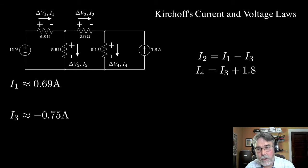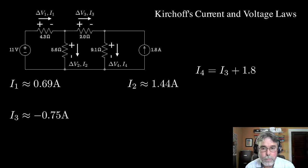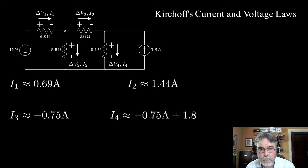Now I can go and move I2 down here and put in I1 and I3 and calculate a value for I2. And you can see that that works out to be about 1.44 amps. And then I can go and do the same thing with I4, put in the value of I3, calculate I4 is the value of 1.05 amps.